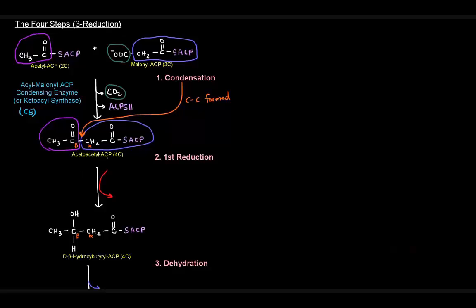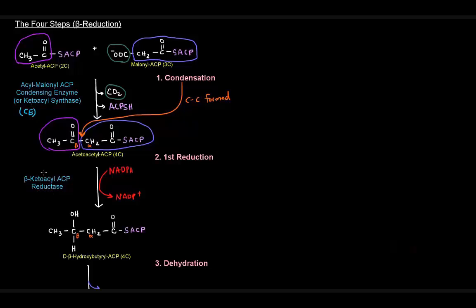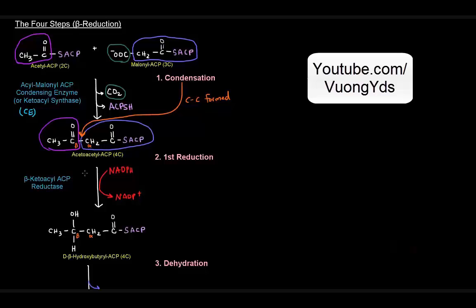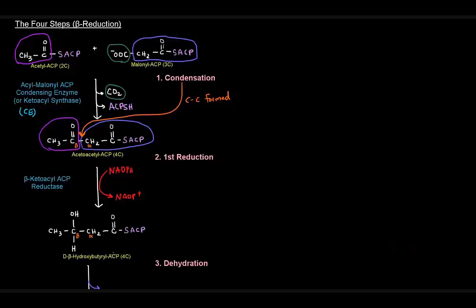The first reduction converts acetoacetyl-ACP, this four-carbon beta-ketoacyl-ACP, into D-beta-hydroxybutyryl-ACP. The reducing agent is NADPH, which goes to NADP+. This reaction is catalyzed by beta-ketoacyl-ACP reductase — it acts on the beta-ketoacyl-ACP and reduces it. The beta-carbon goes from being a ketone to an alcohol, which is the actual reduction at the beta-carbon, hence 'beta-reduction.' That is the first reduction reaction.